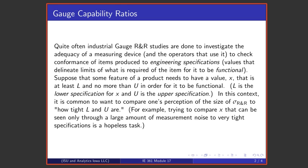Suppose that some feature of a product needs to have some value x that is at least L and no more than U in order to be functional. L would be called the lower specification and U the upper specification.